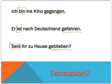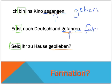So the first one: Ich bin ins Kino gegangen — I went to the movies. And gegangen comes from the verb gehen. You see our GE, our EN, and our irregular stem. Number two: Er ist nach Deutschland gefahren — He travelled to Germany. Again, our GE, our EN, and this time a regular stem from the verb fahren, to travel.